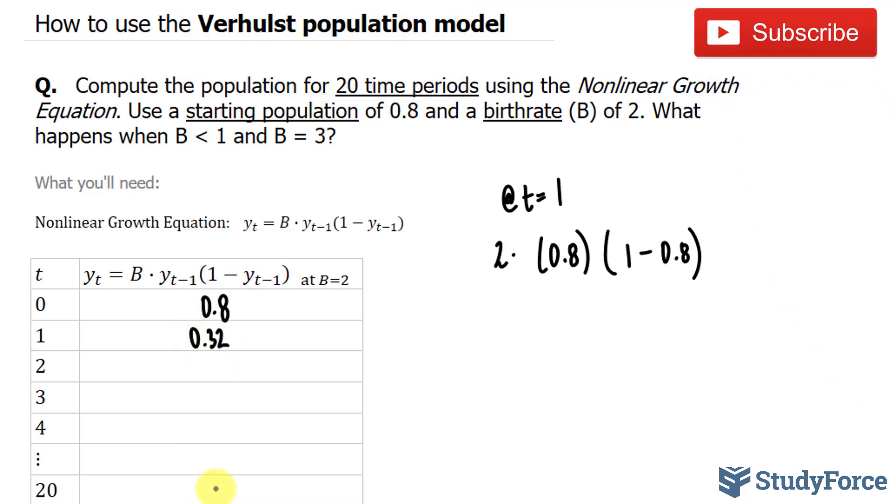Let's do the other ones. At t is equal to 2, we have 2, b doesn't change. And this time, we're going to use 0.32, 0.32 times 1 minus 0.32.